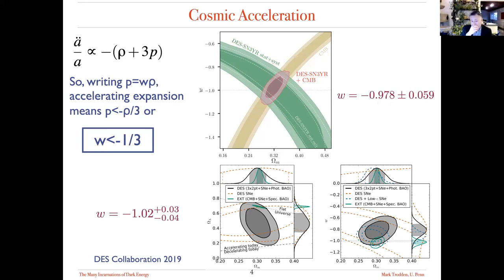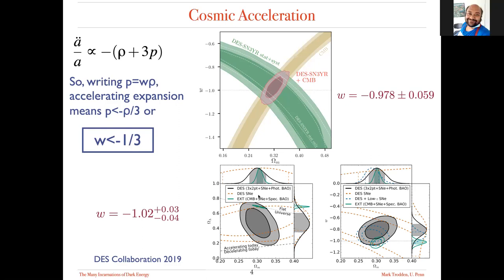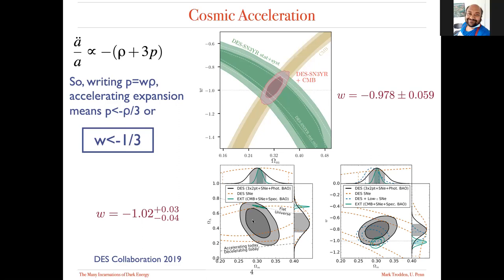Coming back to other data from the DES collaboration from 2019 — putting together the Dark Energy Survey with baryon acoustic oscillation measurements and supernovae — these are very different ways of measuring dark energy and they all point to the same conclusion.